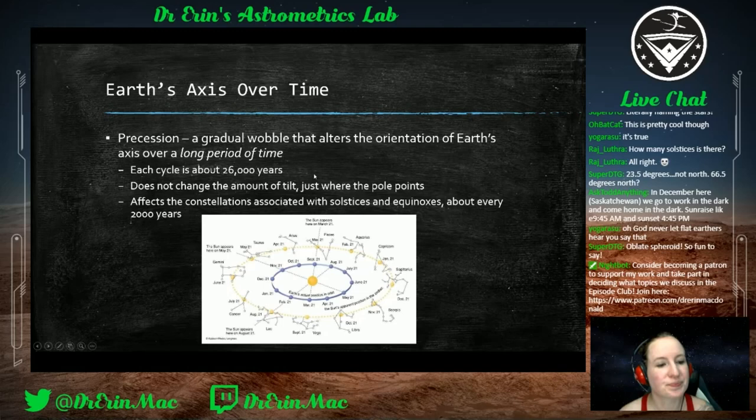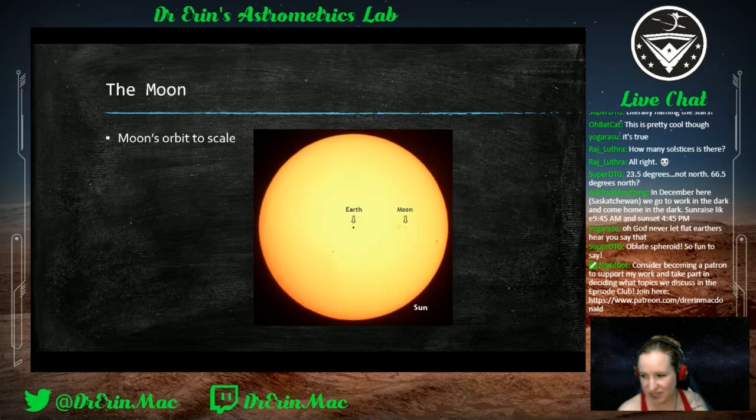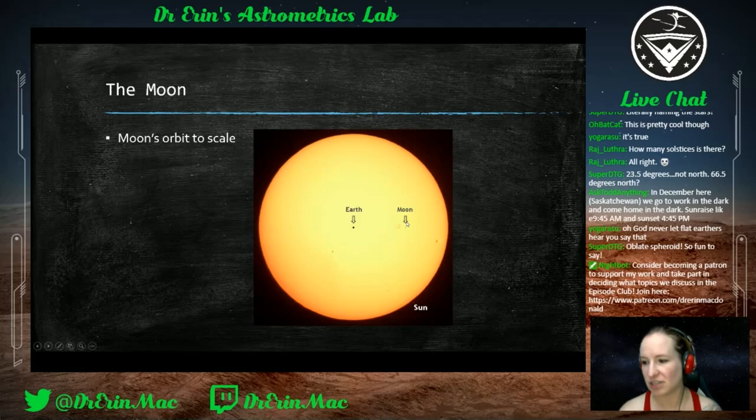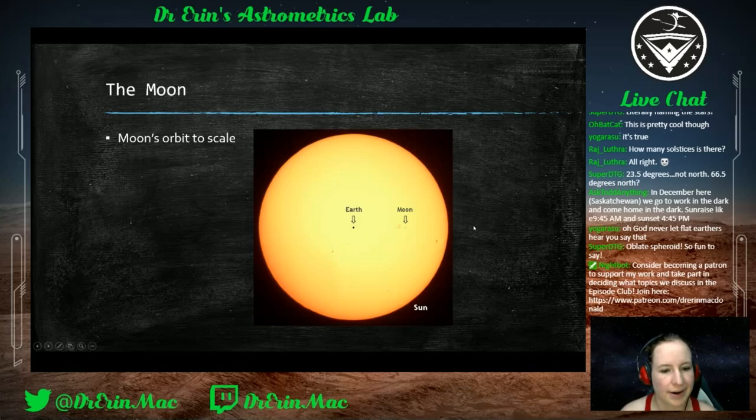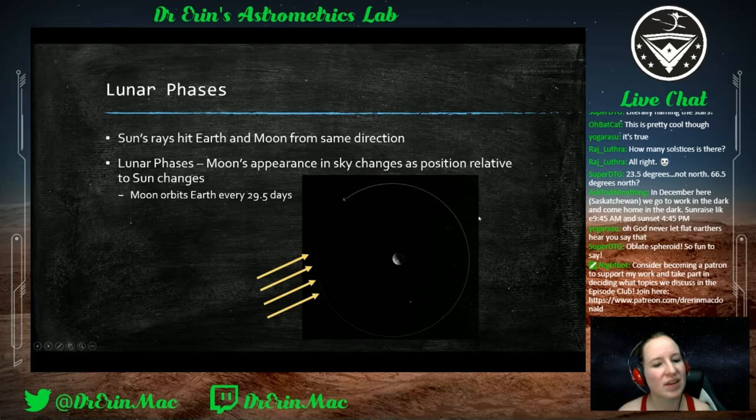Now let's talk about the moon. This image shows the scale of the Earth, the Moon, and the Sun relative to each other. Space is big and things are far apart. This is the size of the Earth relative to the Sun and Moon, and the distance between them — the Sun is very, very big.